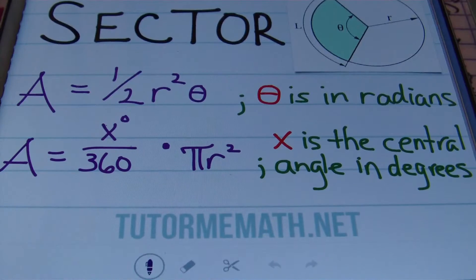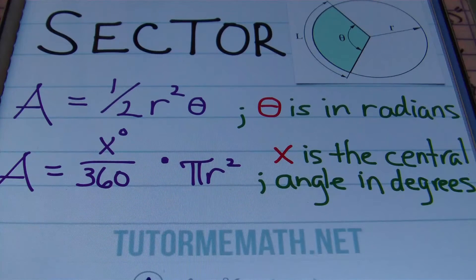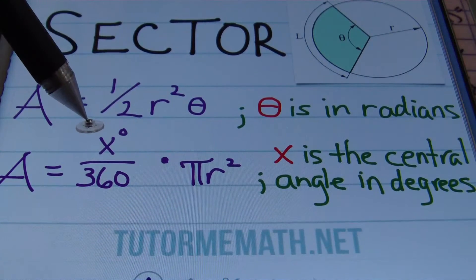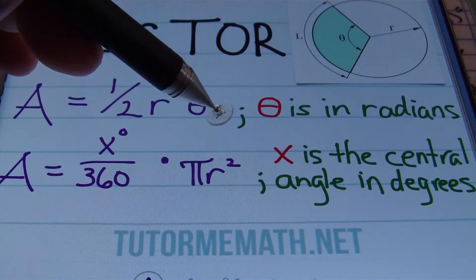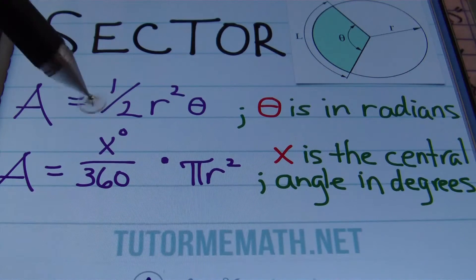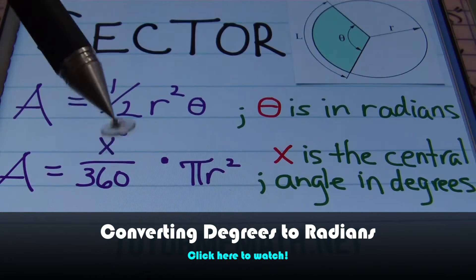Here are the formulas we'll be using. One: the area can be found by taking one-half of the radius squared times theta, as long as theta is in radians. You'll know it's in radians because it will not have a degree symbol. If you see a degree symbol, it's in degrees. If you don't, it's in radians. If they give the central angle in degrees, use this formula: the central angle in degrees divided by 360, times pi r squared — the area of a circle. You can also convert degrees into radians using the link provided.